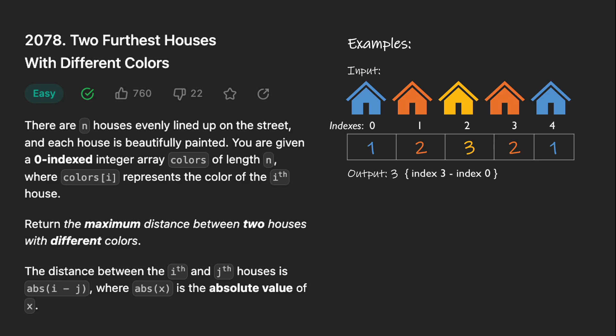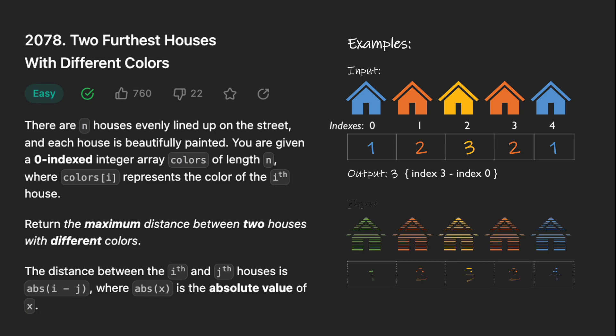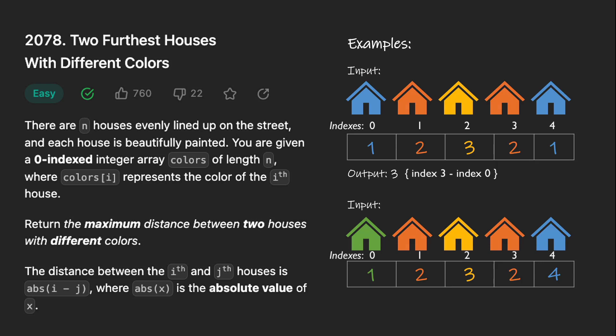Let's look at another example. Again we have 5 houses, and immediately we can see that the color of the first house and the last house is different, so the max distance would be 4 minus 0, that is 4.